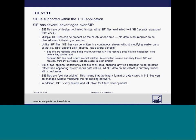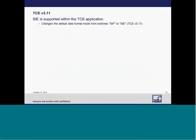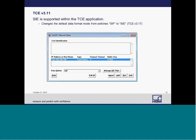SIE files are self-describing, meaning that the binary format of the data stored in the SIE can be changed without modifying the file. The SIE is a flexible data format, and all future developments will be based on SIE format and not SIF. Starting in version 3.17, the default data mode will change from SIF to SIE. To change to the SIE format, go into your test ID and network setup, and in the pull-down next to data options, change that from SIF to SIE if you choose to record in SIE data format.